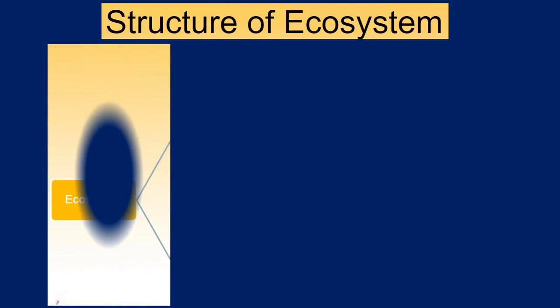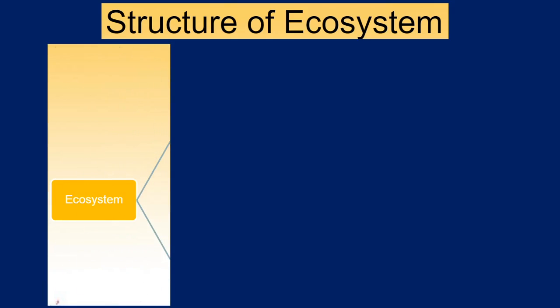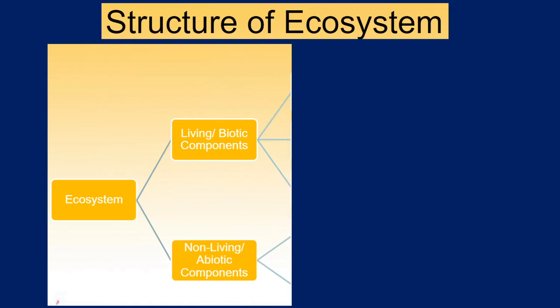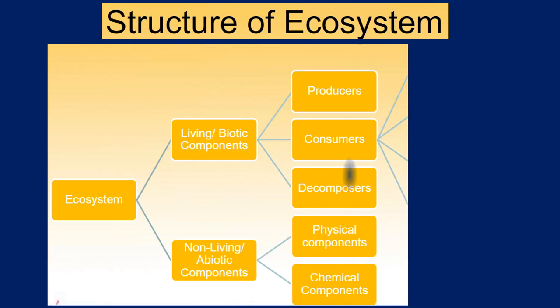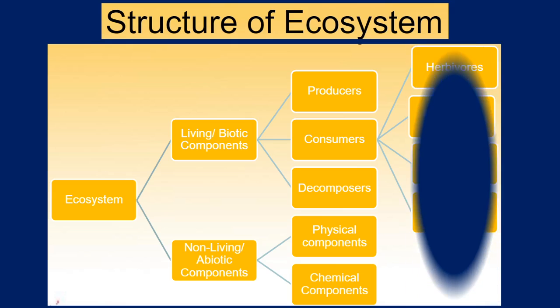If you look at the structure of ecosystem, it is divided into biotic, that is living, and abiotic or non-living components. The biotic component is further divided into producers, consumers, and decomposers, whereas the physical environment is further divided into physical and chemical components.